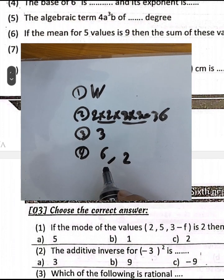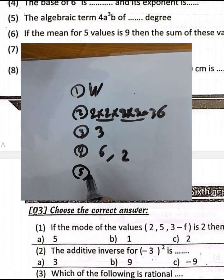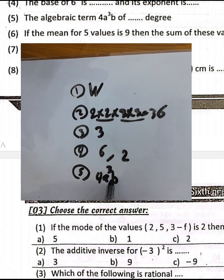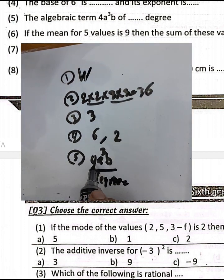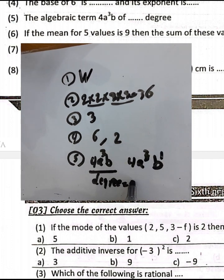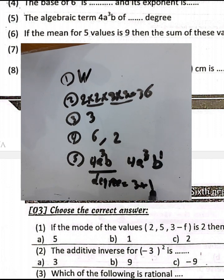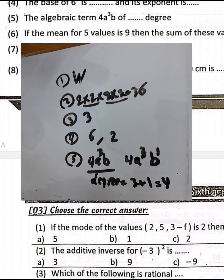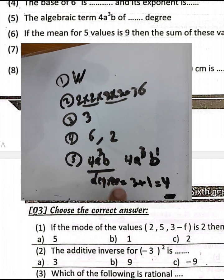Question number 5: the algebraic term is 4e³b. To find its degree, we add the exponents: the power of e is 3 and the power of b is 1, so 3 plus 1 equals 4. The algebraic term 4e³b has degree 4.